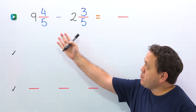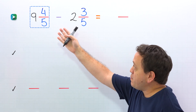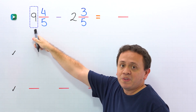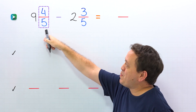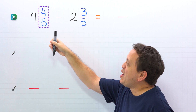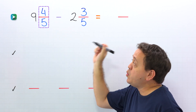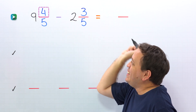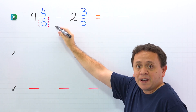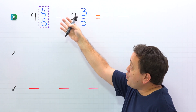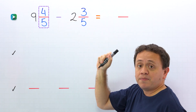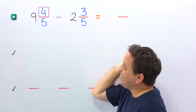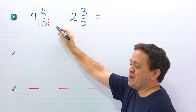Before getting into it, we need to remember that a mixed number, like this one, is the sum of a whole number and a proper fraction. Also, a proper fraction is a fraction where the numerator, the top number, is less than the denominator, the bottom number. Four-fifths is a proper fraction, given that the numerator, four, is less than the denominator, five!